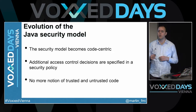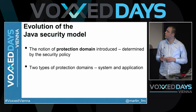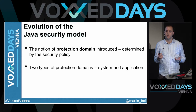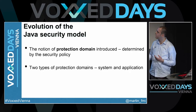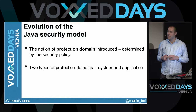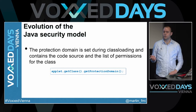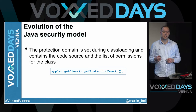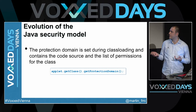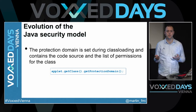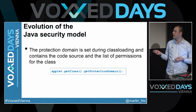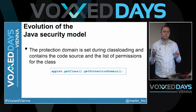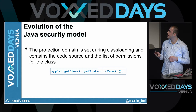Another thing introduced was the notion of protection domain. Protection domains are two types: system and application. The JVM source code is in the system protection domain, and all other applets loaded in the JVM are in the application protection domain. You can get the protection domain from any class loaded in the JVM by calling getClass().getProtectionDomain(). This allows you to return the location from where the class was loaded — for example vox.com/demo-applet — and also the set of permissions that apply to that Java class.